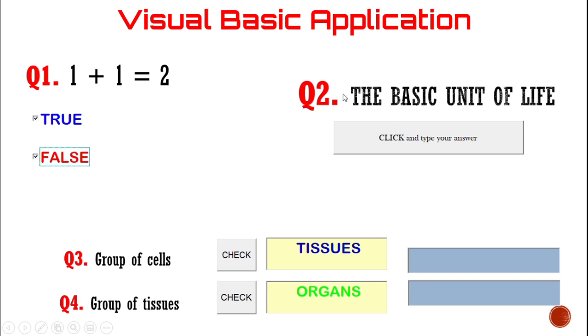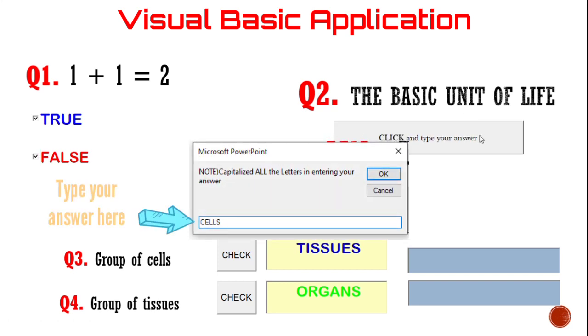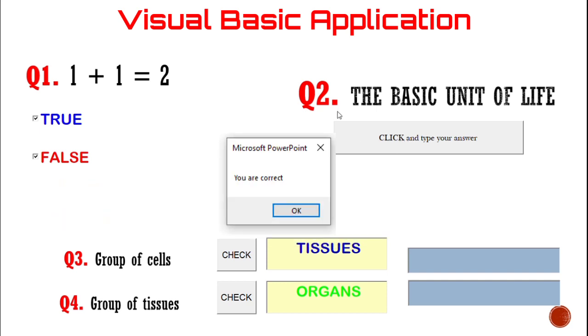While in question number two, we have what is the basic unit of life. Click and type your answer here. This is what we call the command button. And when you click it, then there's a prompt that says note, capitalize all the letters in entering your answer. So the basic unit of life is cell. Let's check. You are correct.